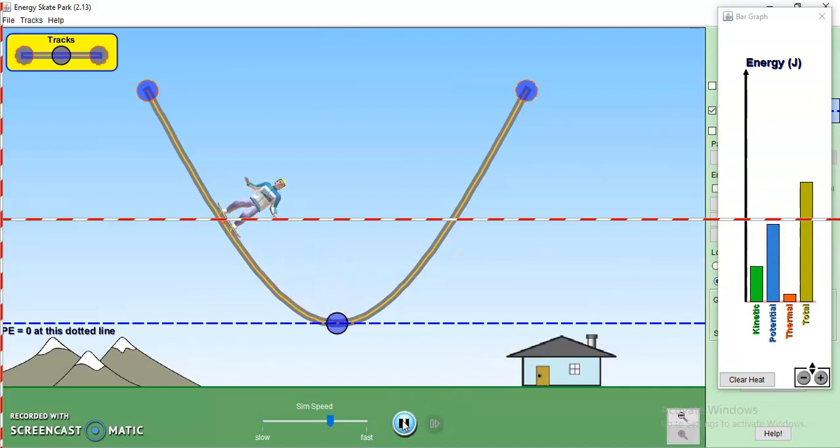Alright, but the main thing I wanted you to see here is that the total amount of energy is staying constant. It's just changing back and forth between the two kinds. And that most of the time, both kinds of energy are present, both potential, specifically gravitational potential, and then kinetic energy.